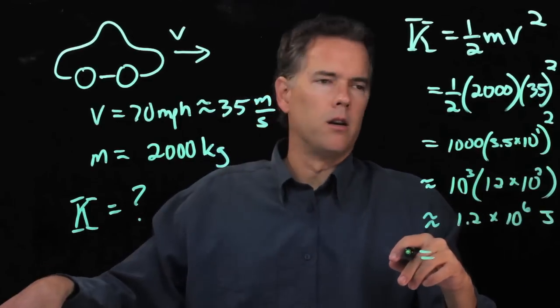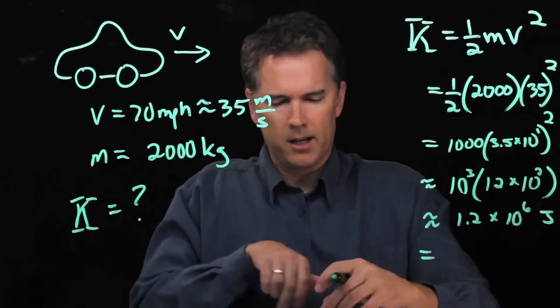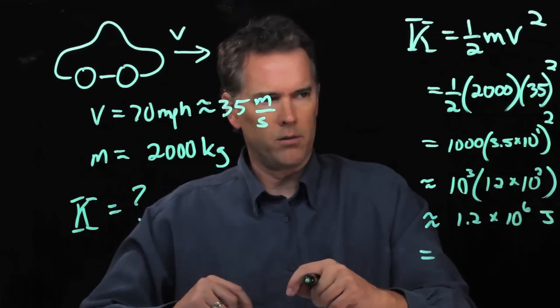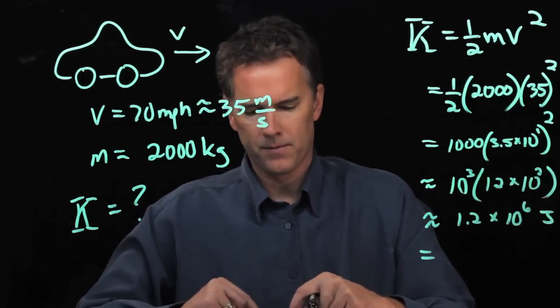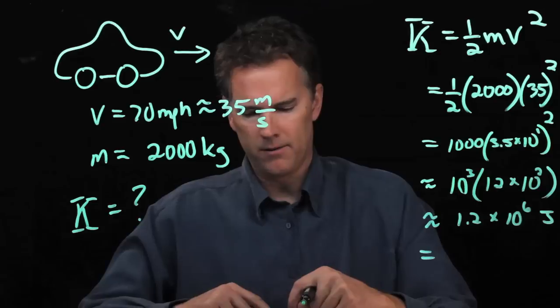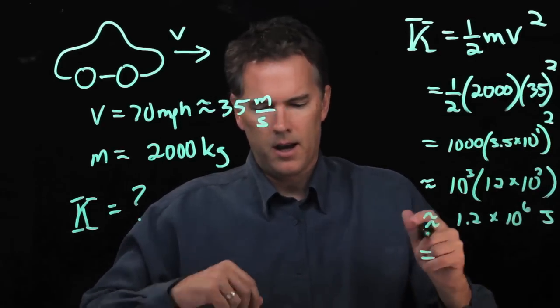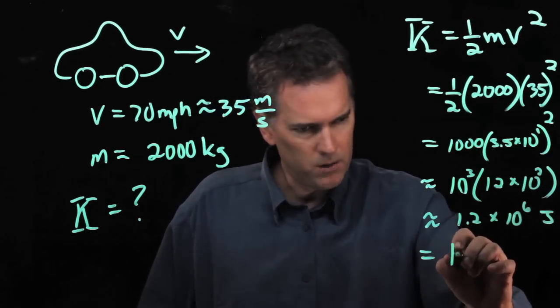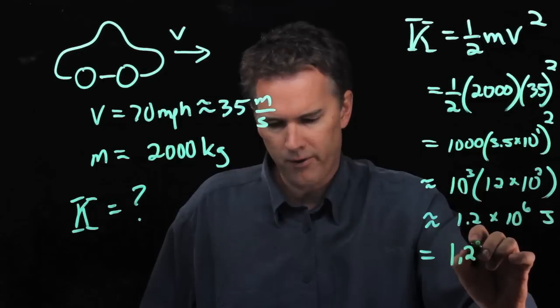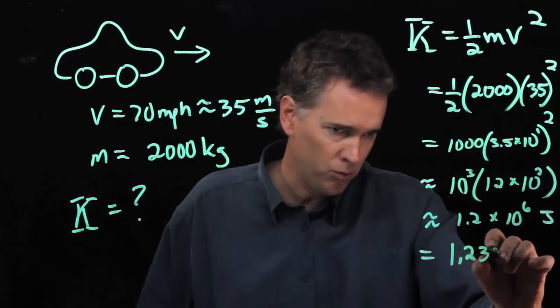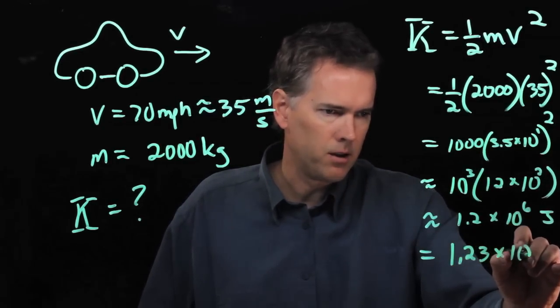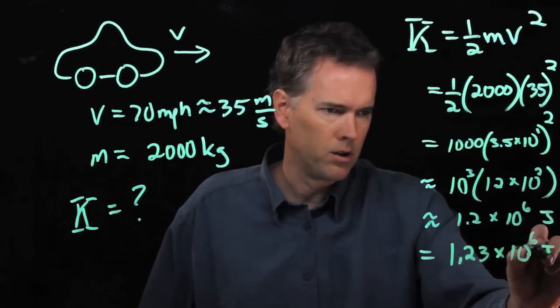And just to be exact let's punch it into our calculator and see what we get. So we've got 1,000 times 35 squared. And here I get 1.225 so that's 1.23 times 10 to the 6 joules.